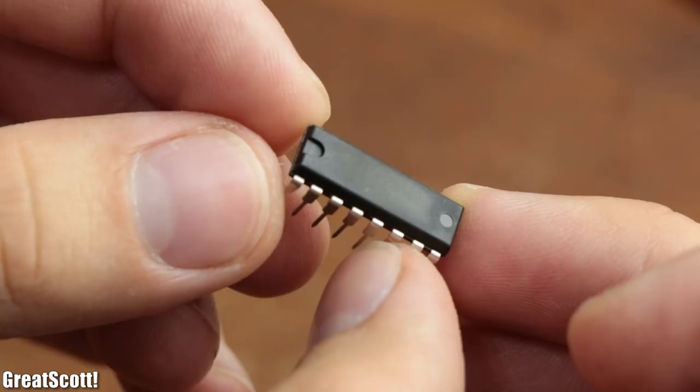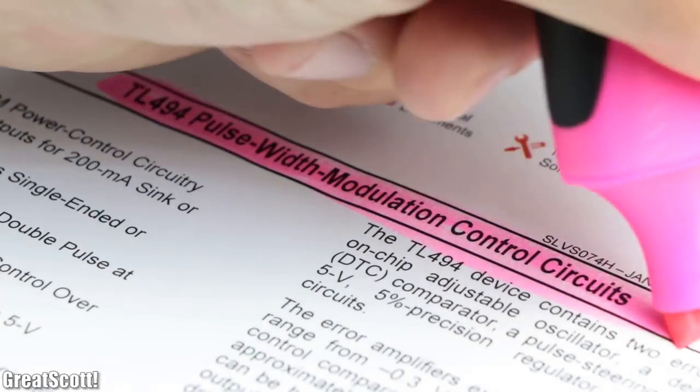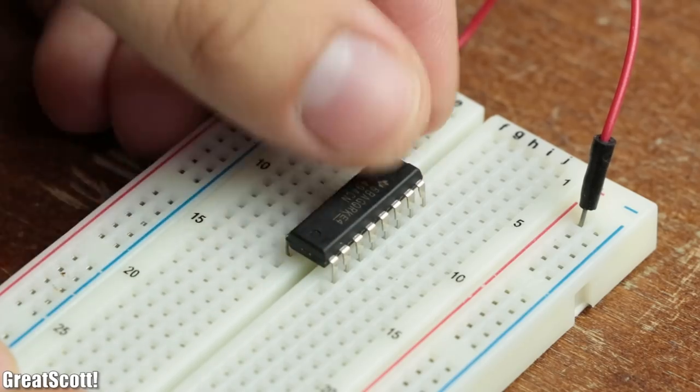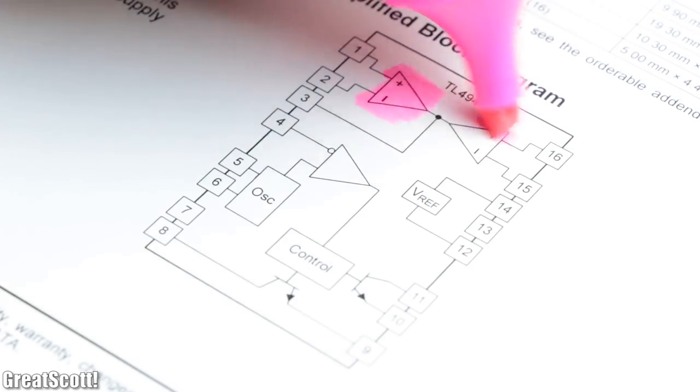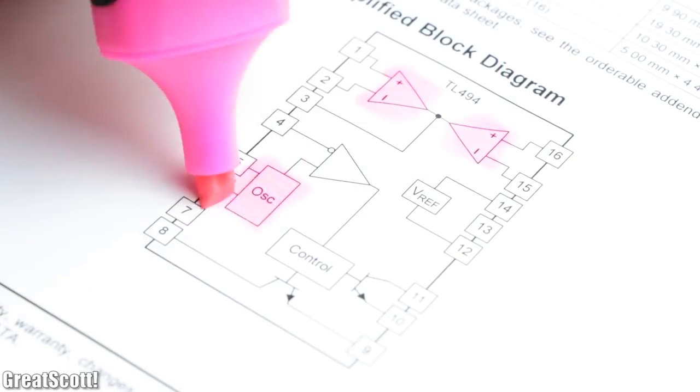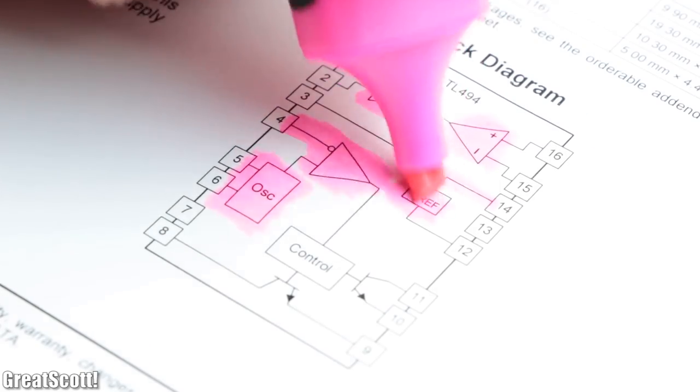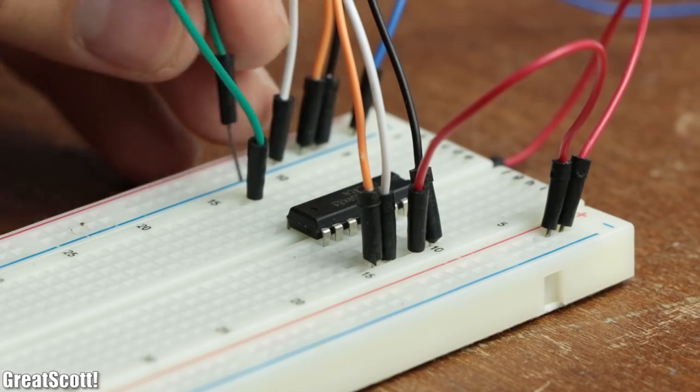And to create this signal I utilized the TL494 Pulse Width Modulation Control Circuits IC, which is very useful for all kinds of PWM circuits since it contains two error amplifiers, an oscillator, a dead time control comparator, a 5V voltage reference, and two output transistors.